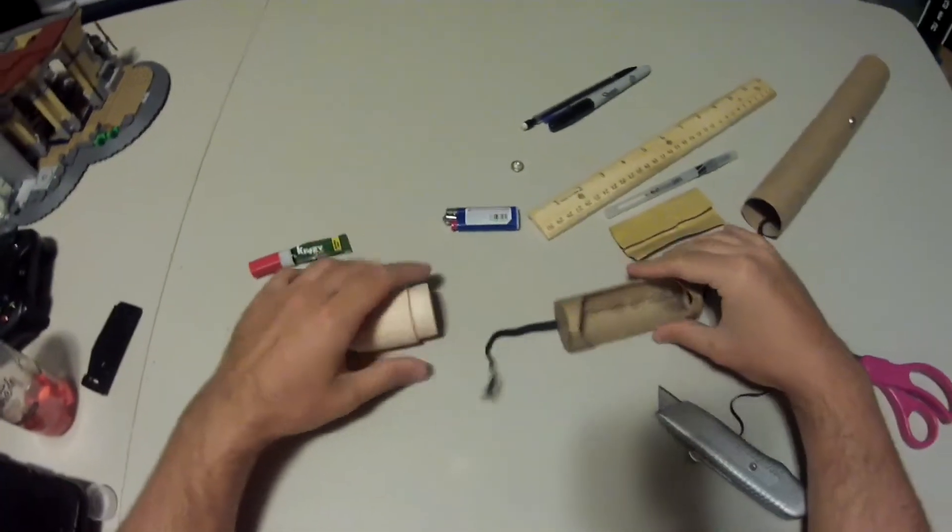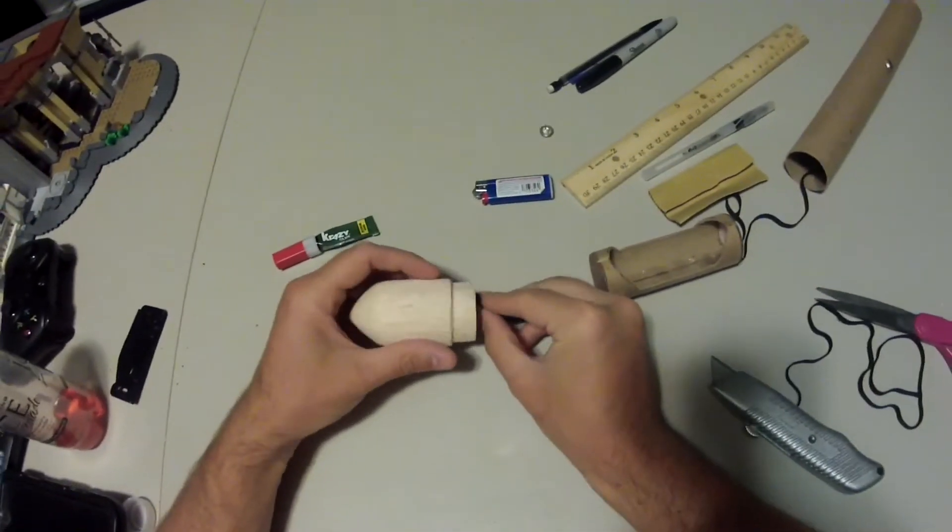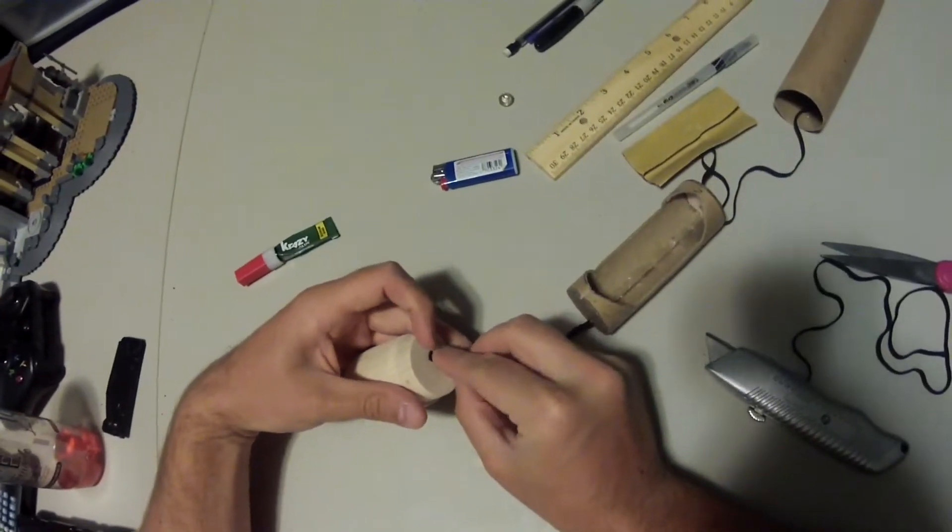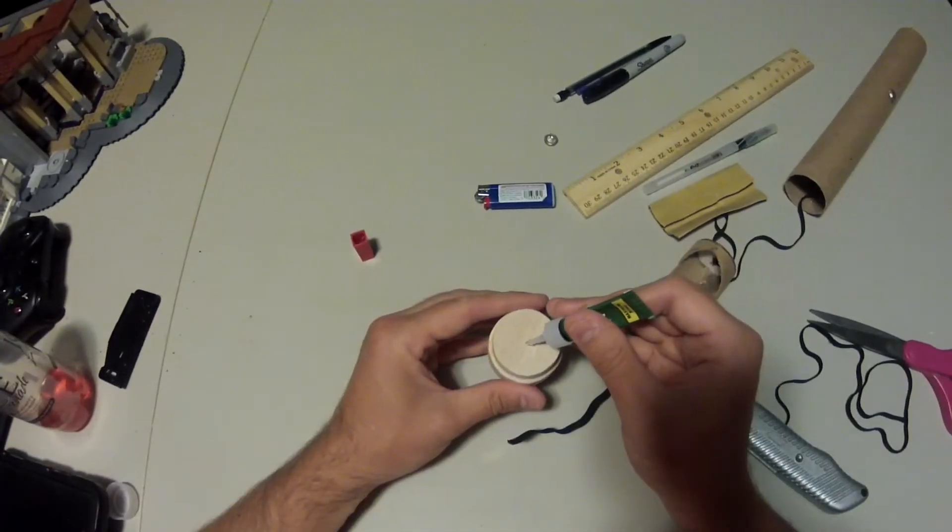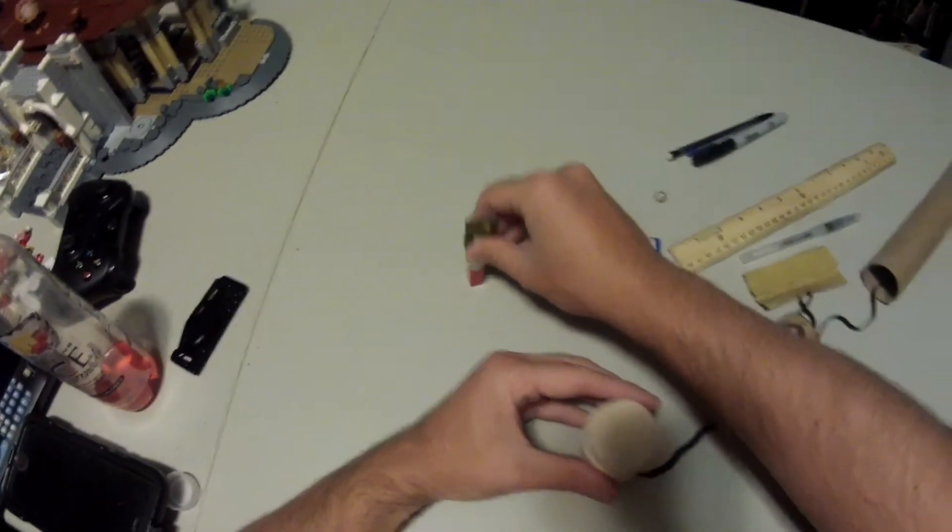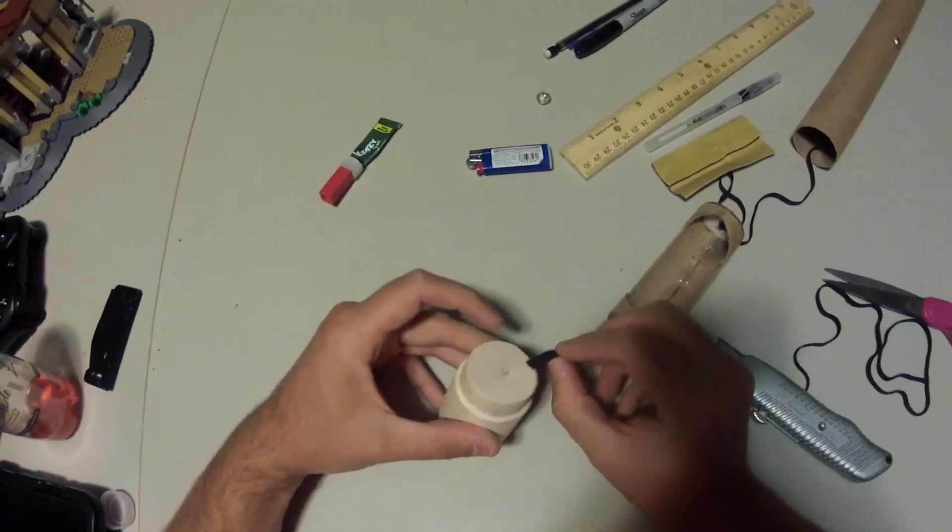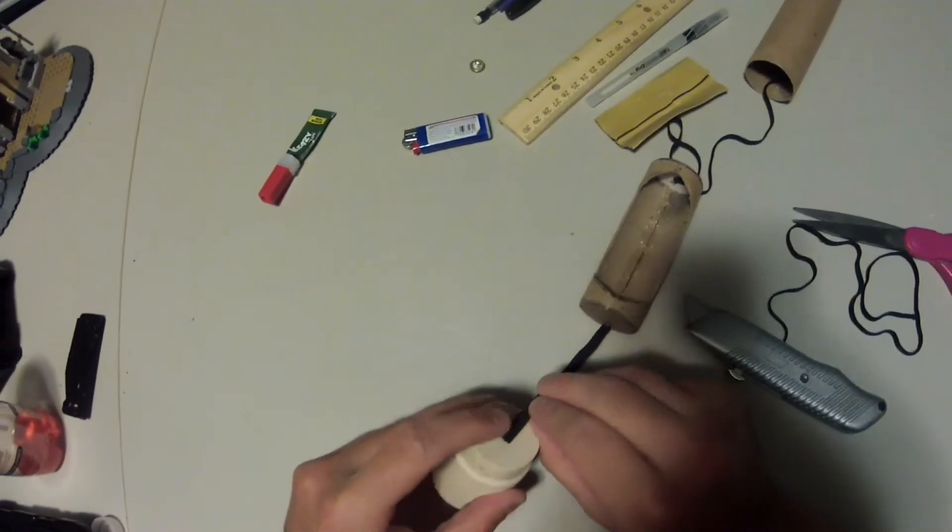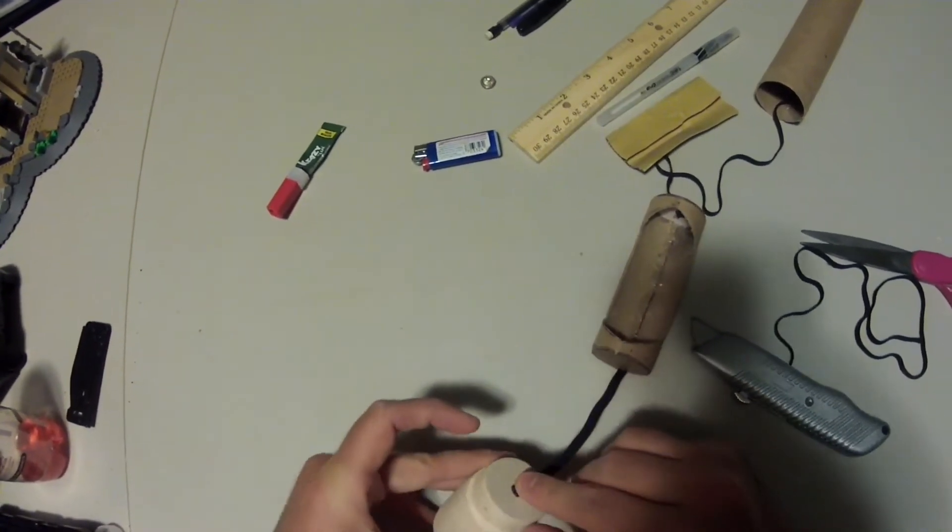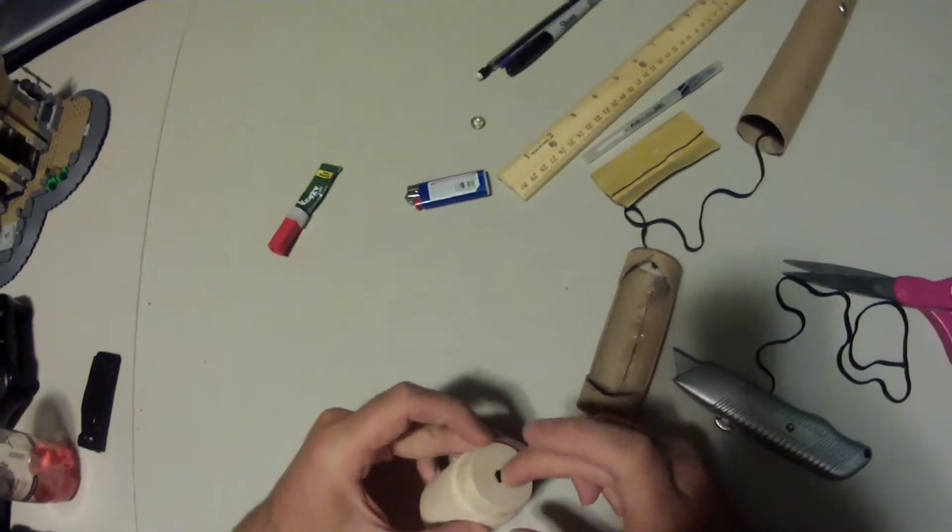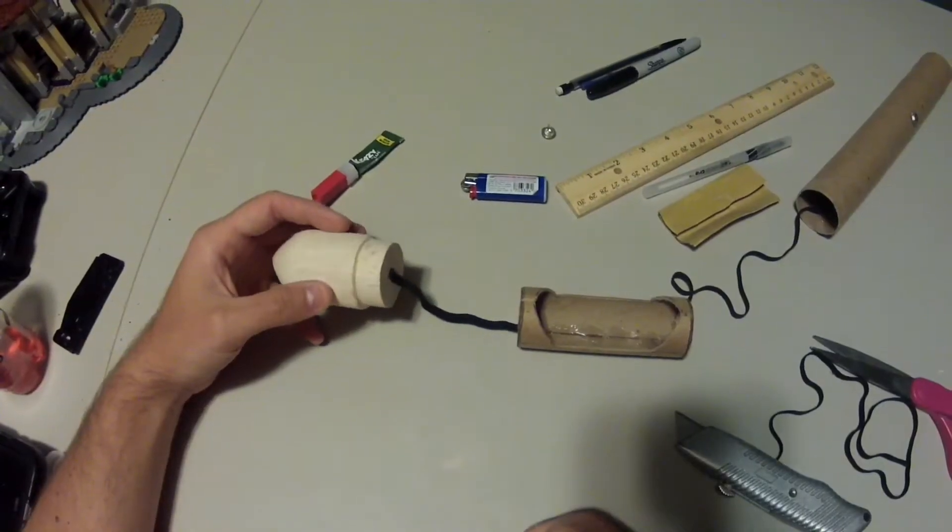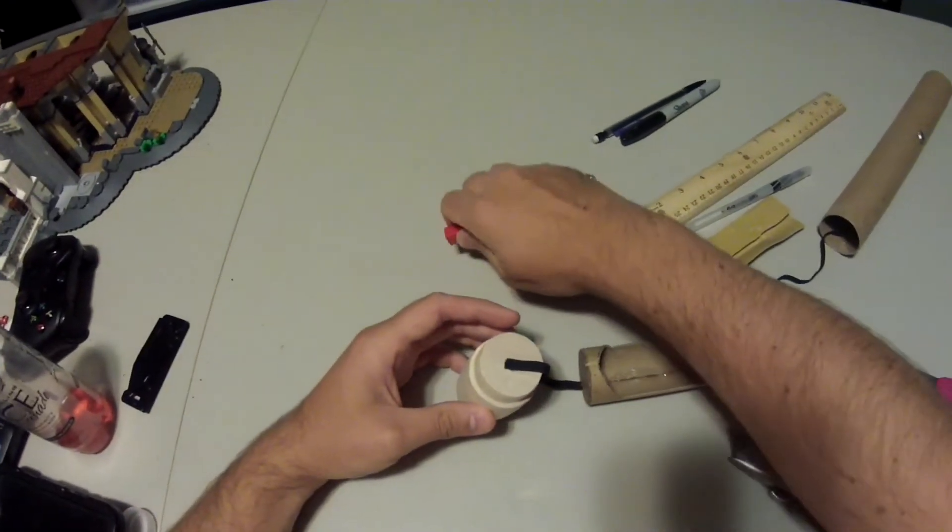Go ahead and attach the other end of the shock cord to the bottom of your nose cone. Put a bead of superglue right there in the center of the bottom of the nose cone. Press your shock cord down onto it, 30 seconds, let it dry. And again secure it with some more superglue.